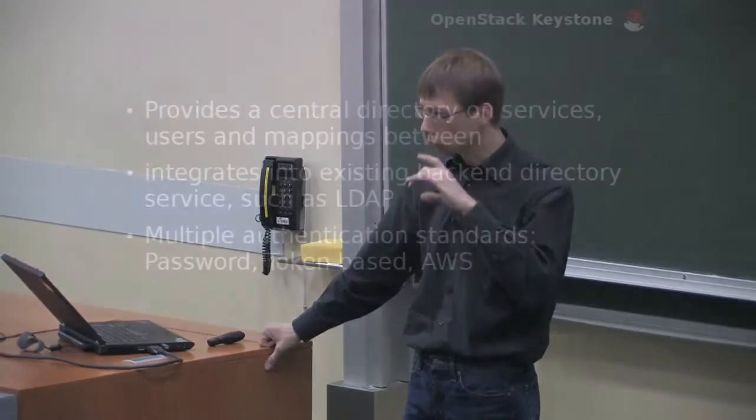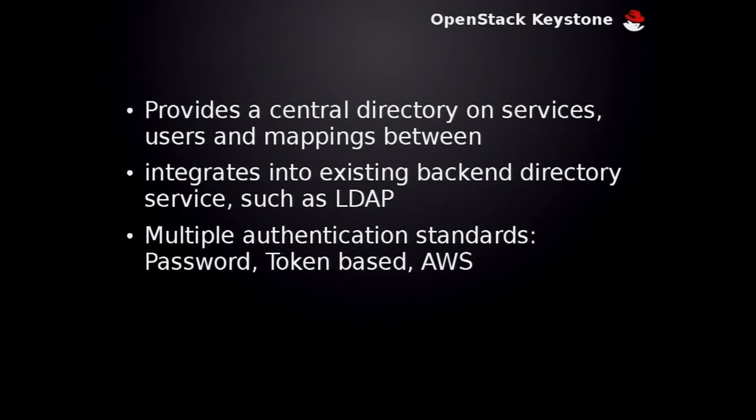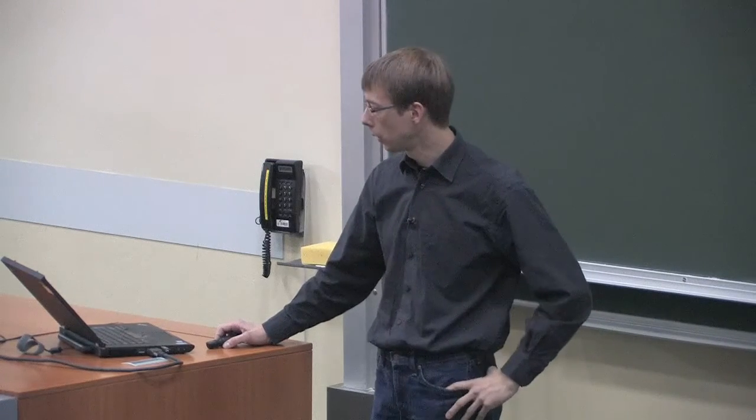If you remember those large picture earlier, we have a service Keystone. It was on the bottom of the page. It provides you a central dictionary of services and users and also mappings between them. Who is allowed to do this is, and on the other hand, if you're a user, you could ask your Keystone, I'm user blah blah blah, am I allowed to do this and also give me a list of service APIs. You could plug your Keystone into LDAP. And also, you have multiple authentication standards such as password authentication, token-based authentication, and so on.